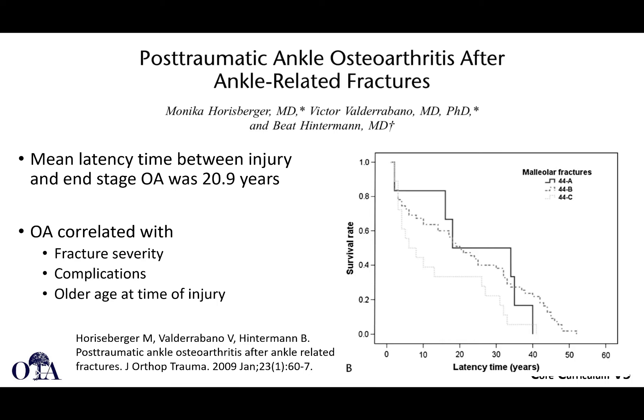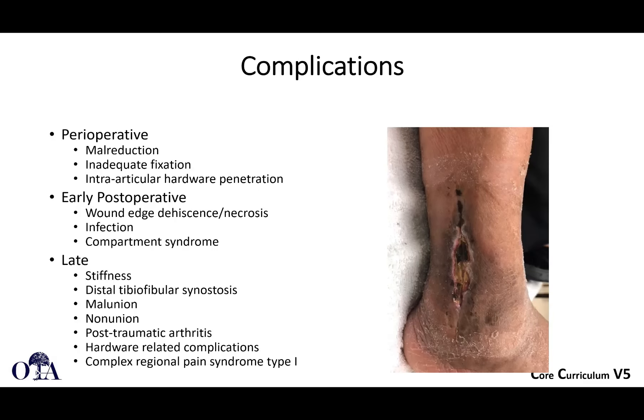Does osteoarthritis occur? Sure, it can occur. The mean latency time between injury and end-stage osteoarthritis is about 21 years. It's correlated with fracture severity, complications, and older age at the time of injury, as shown on that survival curve.